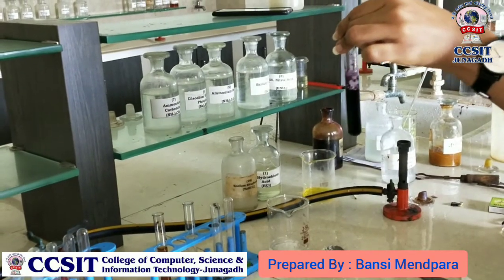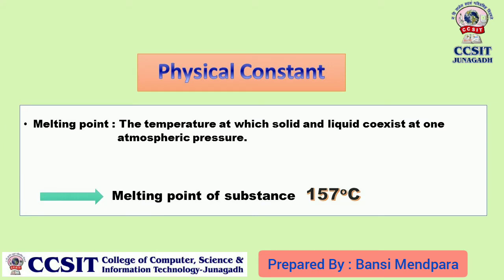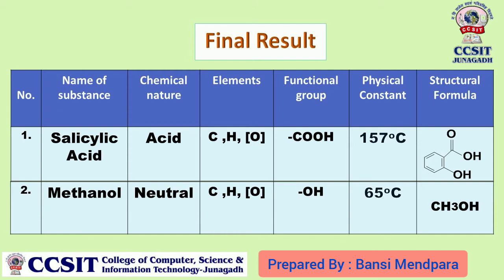Confirm that salicylic acid is present. The compound melting point is 157 degrees Celsius. Final result: the compound is salicylic acid, chemical nature is acid, elements C, H, O, functional group COOH, physical constant 157 degrees Celsius. The compound is methanol, chemical nature neutral, elements C, H, O, functional group OH, physical constant 65 degrees Celsius. The formula is CH3OH. That is the final result.